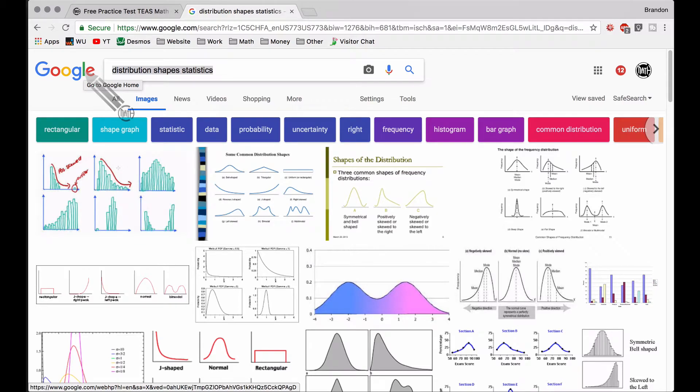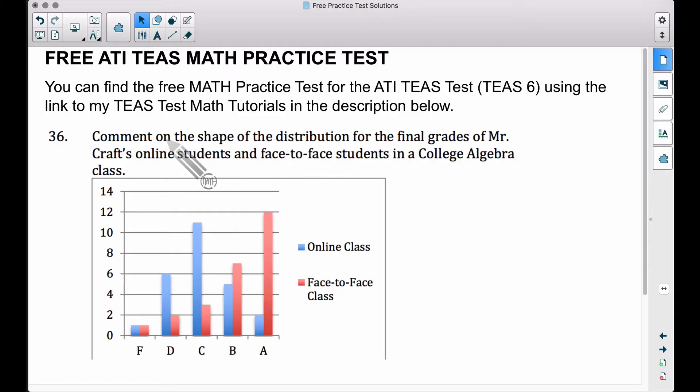So we got two different types of classes here. Comment on the shape of the distribution for the final grades of Mr. Craft's online students and face-to-face students in a College Algebra class. So let's look at the online class, the blue bars. If I come through here and roughly trace through the tops of these bars, notice that we have somewhat...